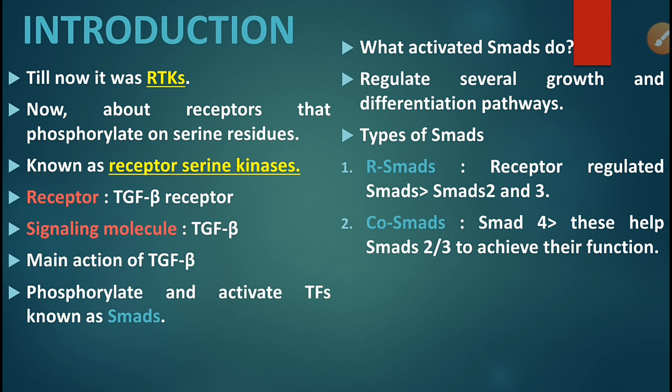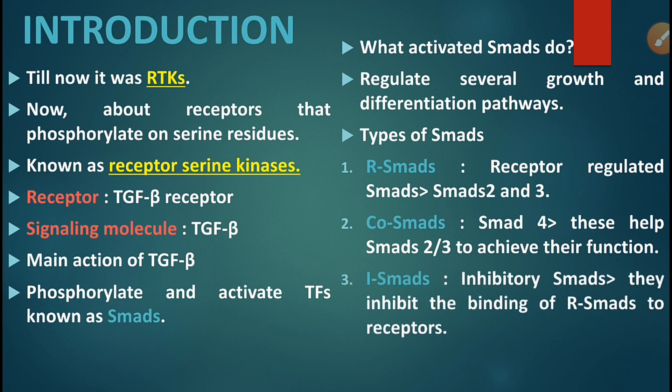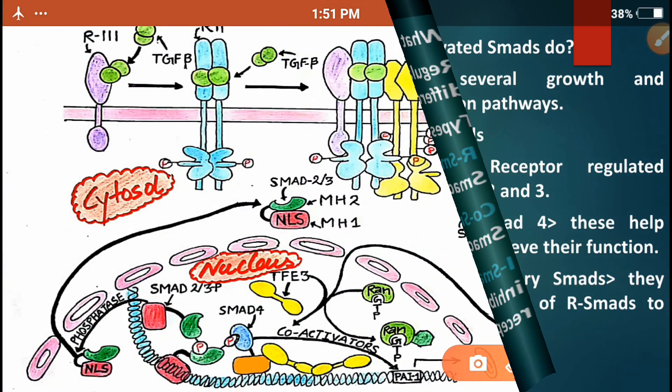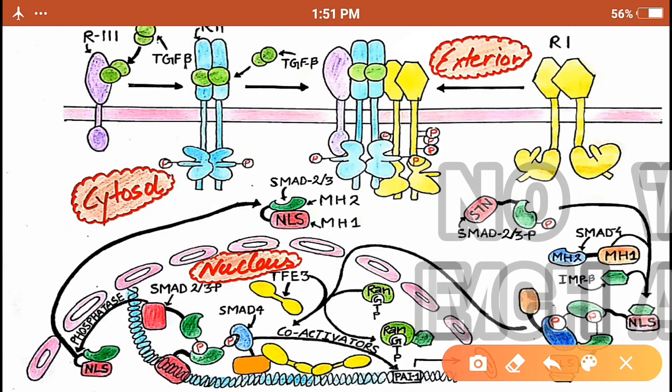The third type is the I-SMADs, where I stands for inhibitory. These are inhibitory SMADs that actually inhibit the binding of receptor-regulated SMADs to their receptors, thereby not allowing the pathway to operate.